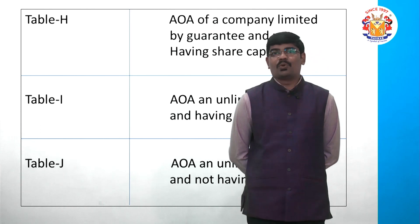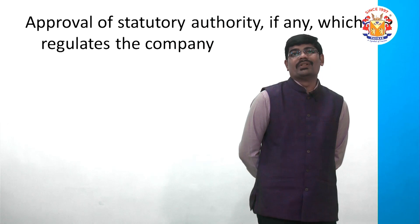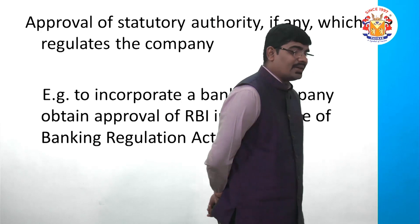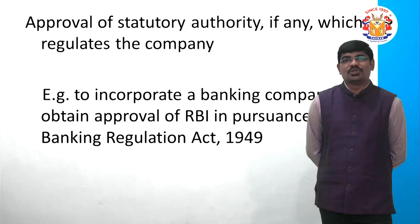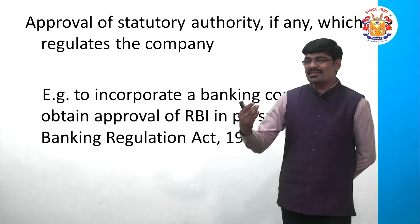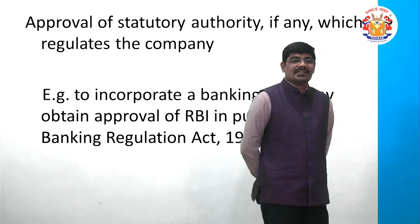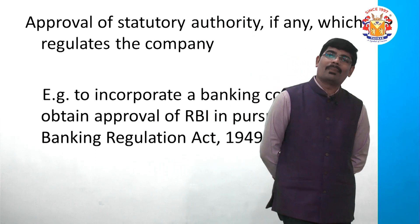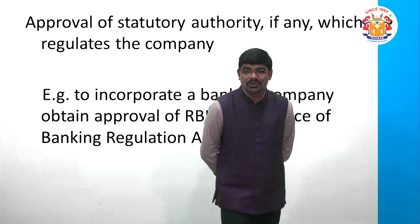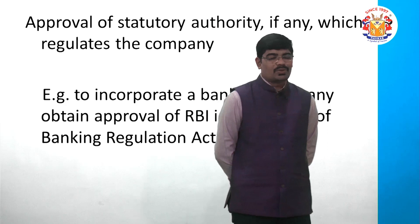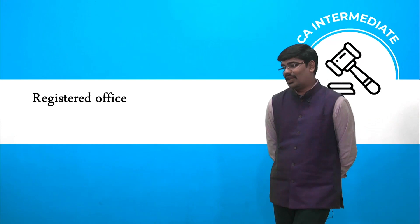Some additional documents relating to statutory approvals must be attached. If your company is regulated by a statutory authority — for example, a banking company is regulated by RBI under the Banking Regulation Act 1949, so you need RBI's approval before incorporating. Similarly, for a telecom company you need approval from TRAI, and for an insurance company, approval from IRDAI. For regulated sectors, you must obtain approval from the relevant statutory authority.